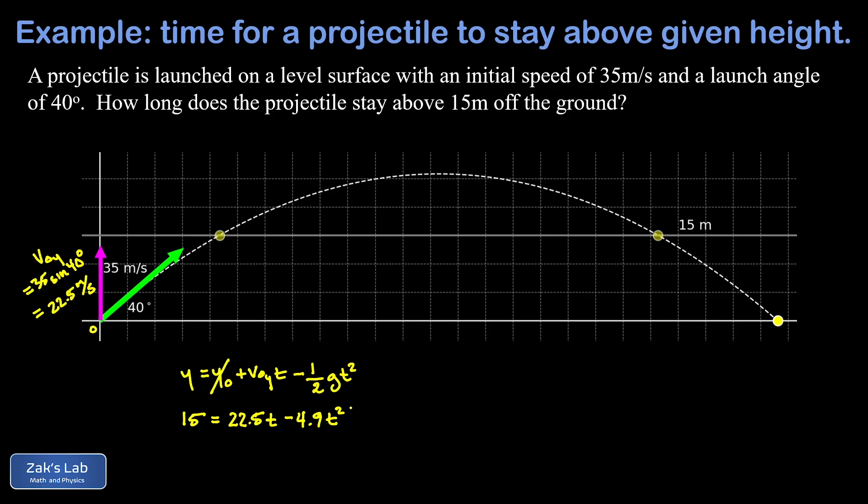Now this is a quadratic equation. And that should produce two times for us at which the projectile reaches 15 meters. And that's what we're after, we're just going to take the difference between those two times.